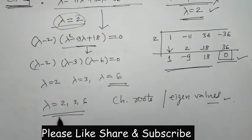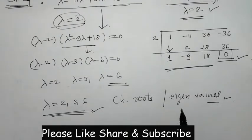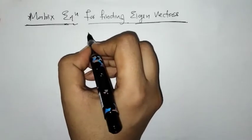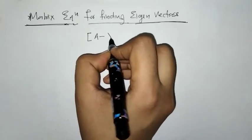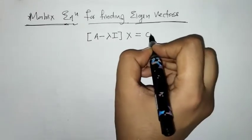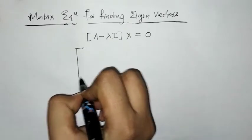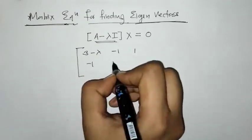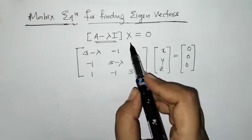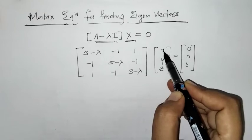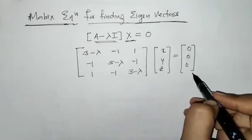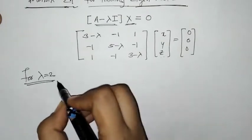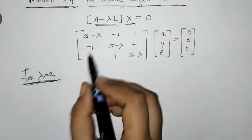Now for these eigenvalues we have to find the eigenvectors. For this we consider the matrix equation A minus lambda I times x equals 0, where x is the vector having unknowns x, y, z, and 0 is the zero vector. We have to put the A minus lambda I matrix, which we found earlier, into this equation. Now we put lambda equals 2 to find the respective eigenvector.